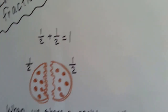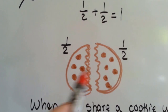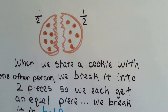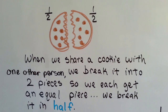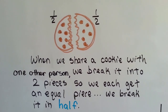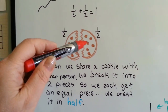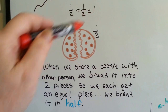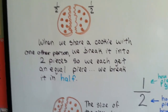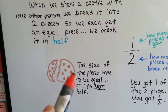So now look at this cookie. This cookie got split in half so that two people could share it. When we share a cookie with one other person, we break it into two pieces so we each get an equal piece. We break it in half. This half plus this half equals one whole. It was one whole cookie and we broke it into two halves. The size of the pieces have to be equal or it's not half.